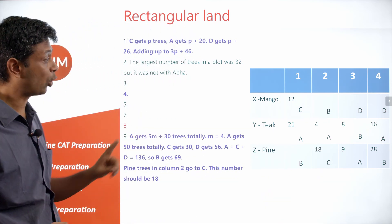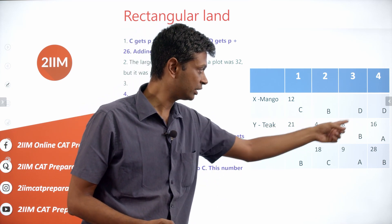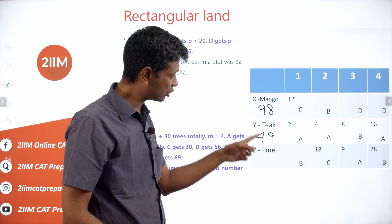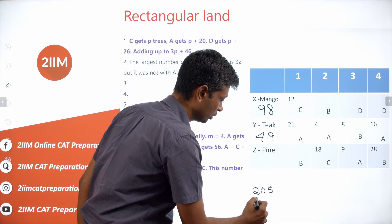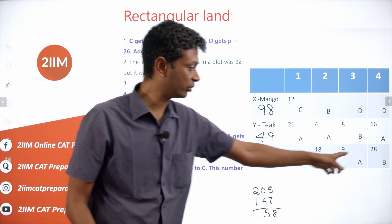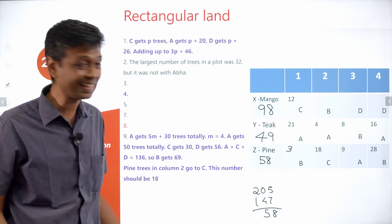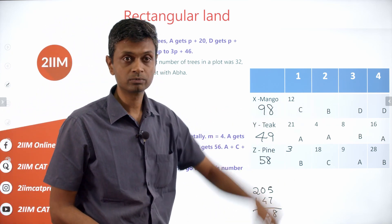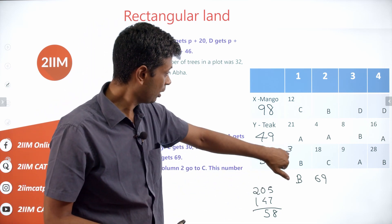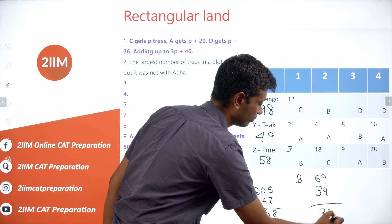Bina already has 8 and 28 accounted for, totaling 36, so her remaining two cells must sum to 33. Total pine trees: we know 18, and the cells with 4, 8, 16 for teak give us teak total 49, mango total 98. So pine total equals 205 minus 147 equals 58. With 18 plus 9 plus 28 equals 55 already placed, the remaining pine cell is 3.